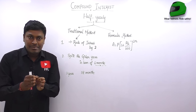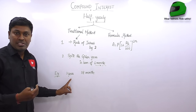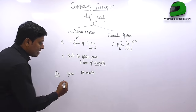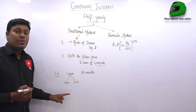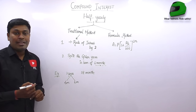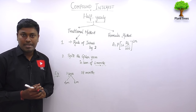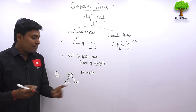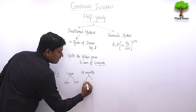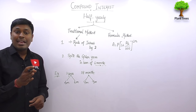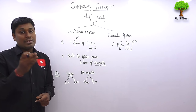Before going to the traditional method, let me explain what half-yearly means. We normally find interest for one year, two years, etc. But for half-yearly, we need to find interest for six months. Yearly is 12 months, so half-yearly is six months. Instead of calculating interest for one year, our target is to calculate interest for each six-month period.